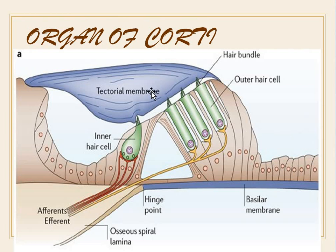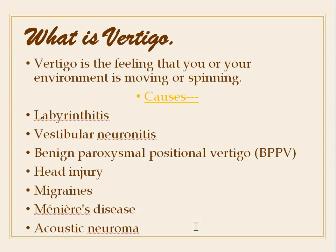Again, you can see the tectorial membrane, the basilar membrane, the outer hair cells, the inner hair cells, and the tunnel. The inner hair cells lie over the osseous spiral lamina and the outer hair cells lie over the basilar membrane.